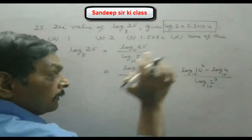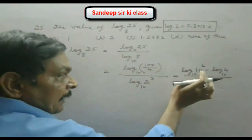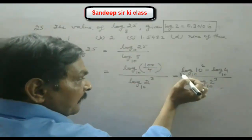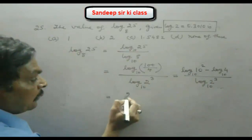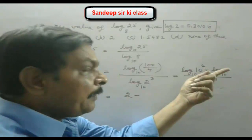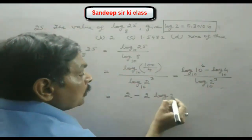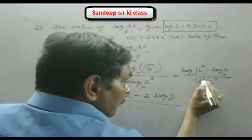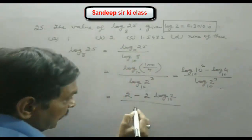The power 2 comes ahead — 2 times log 10 to the base 10, and since log 10 = 1, the first term is 2. Then log 4 is written as log 2², giving 2 log 2 to base 10. In the denominator, log 2³ to base 10 becomes 3 log 2 to base 10.